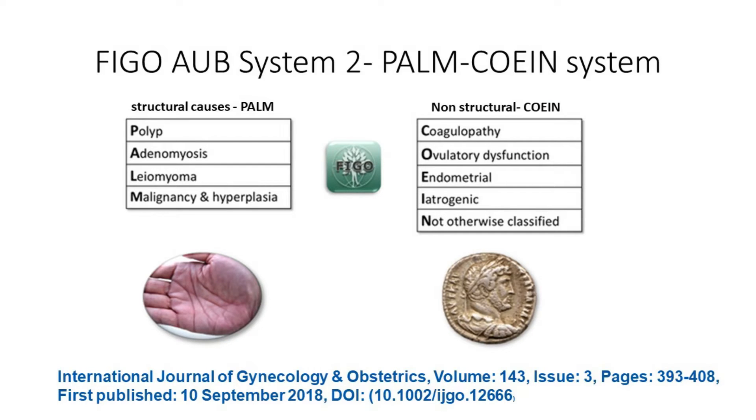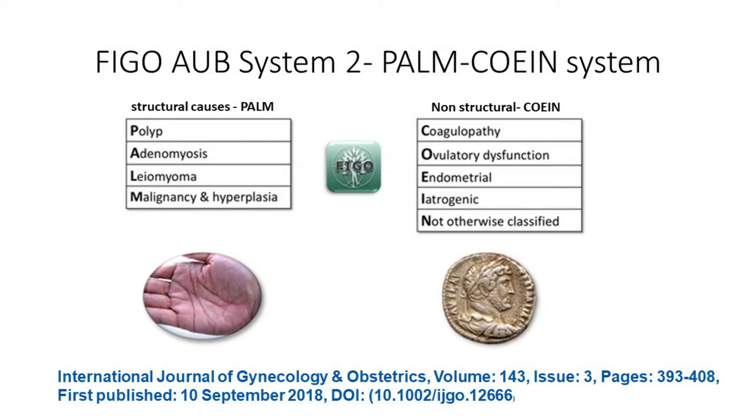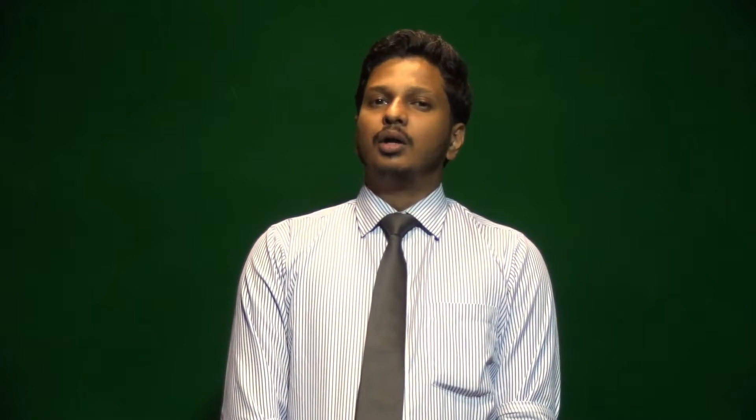FIGO System 2, also known as the PALM-COEIN, covers structural and non-structural causes. The structural causes: P stands for polyp, A for adenomyosis, L for leiomyoma or fibroids, and M for malignancy and hyperplasia. On the non-structural side: C stands for coagulopathy, O for ovulatory dysfunction, E for endometrial causes, I for iatrogenic, and N for not yet classified.